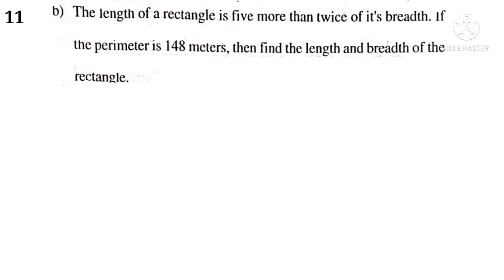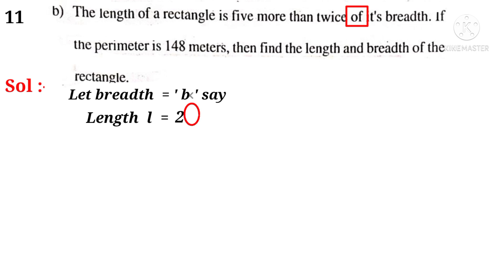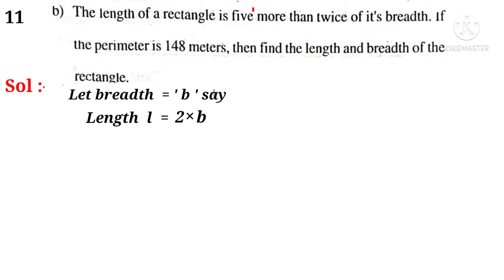Now, 11b. The length of a rectangle is 5 more than twice of its breadth. If the perimeter is 148 meters, then find the length and breadth of the rectangle. Solution: let breadth be equal to b. Then, observe the word 'twice' — it indicates number 2. 'Of' indicates the operation multiplication. 'More' indicates plus 5. So, length l is equal to 2b plus 5.